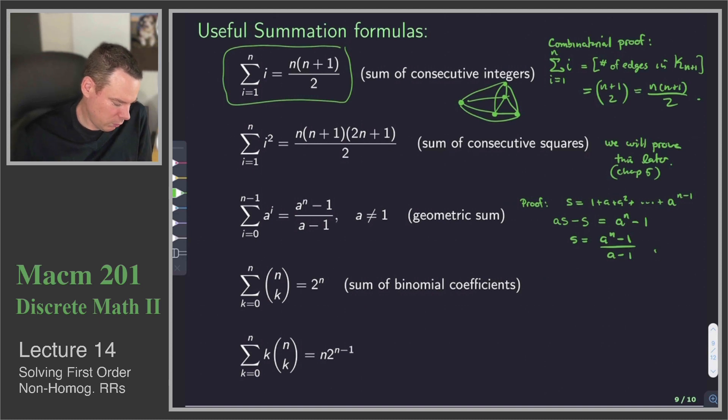How about the sum of binomial coefficients? This is the binomial theorem with x equals 1 and y equals 1. We could also do a combinatorial proof. We just recognize these things are counting the same thing. 2 to the n is the number of binary strings of length n.